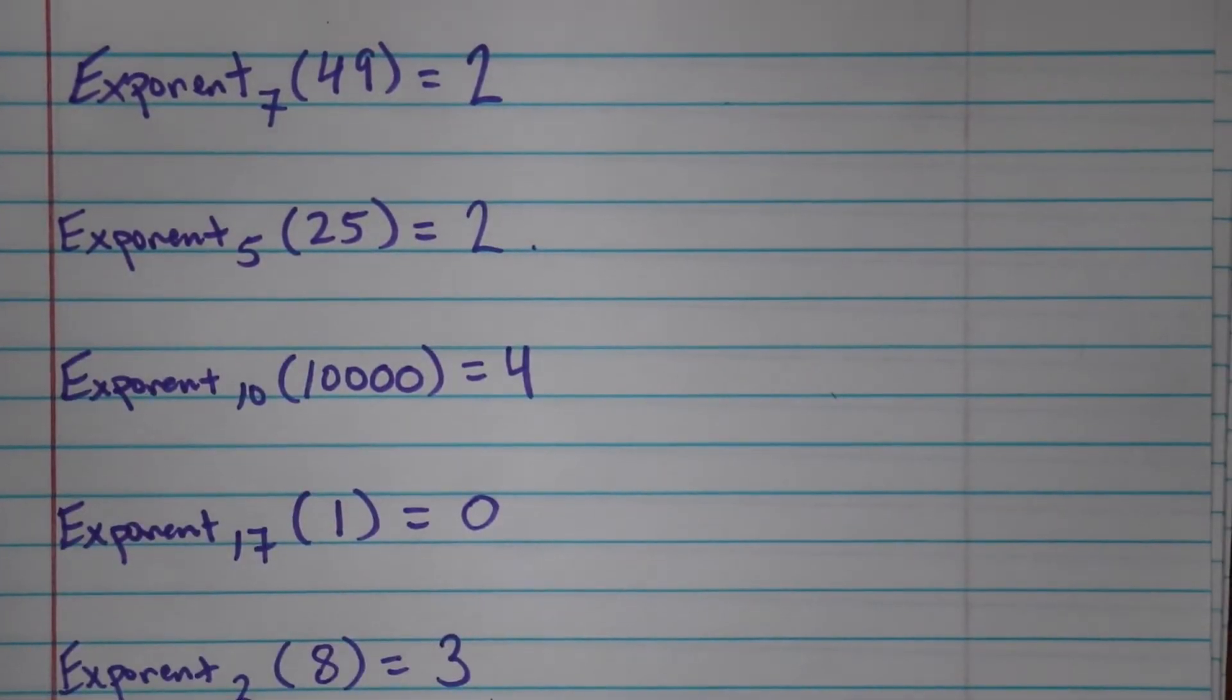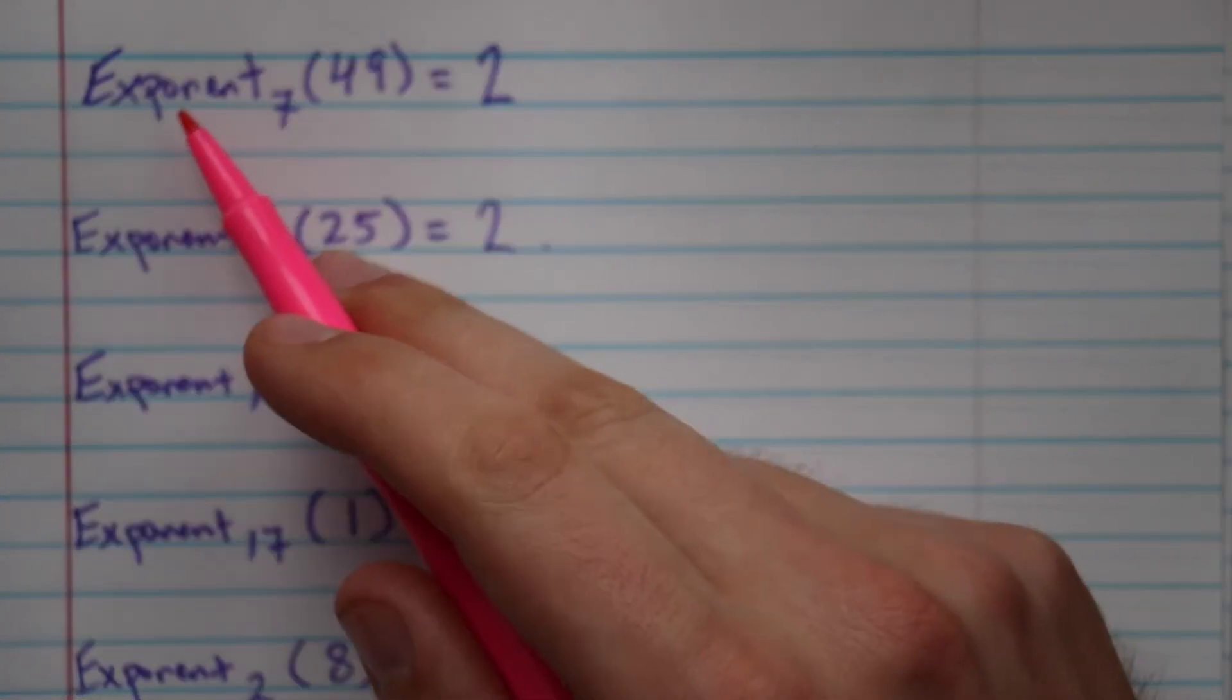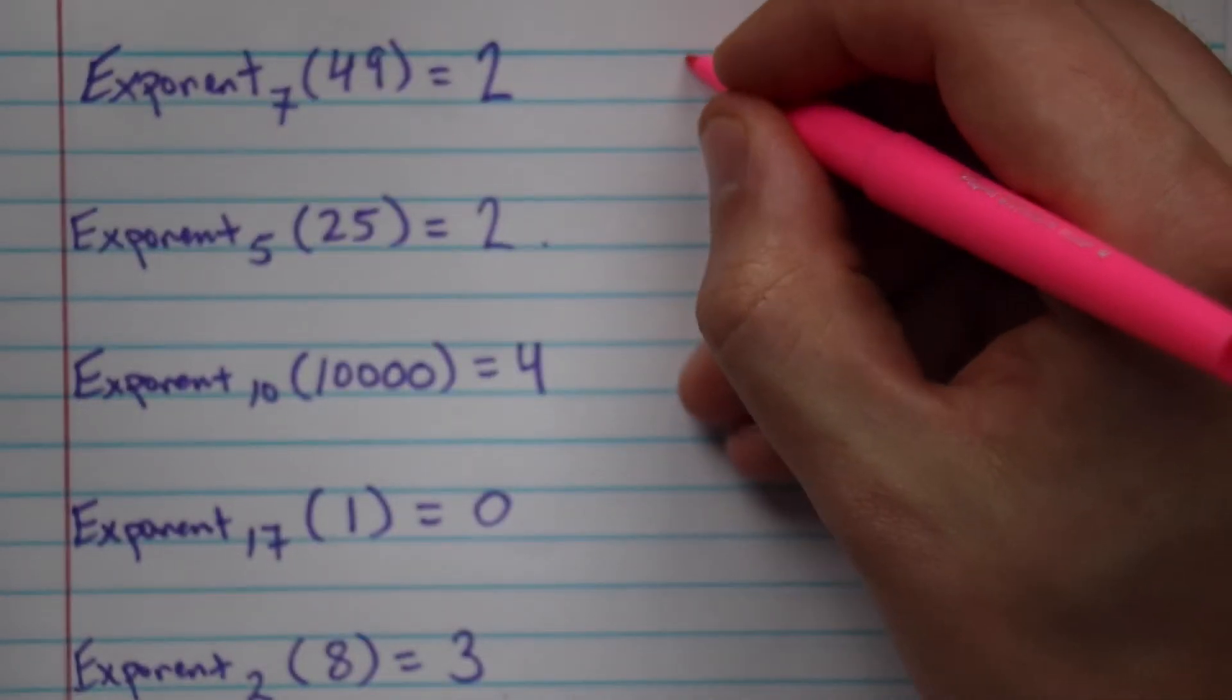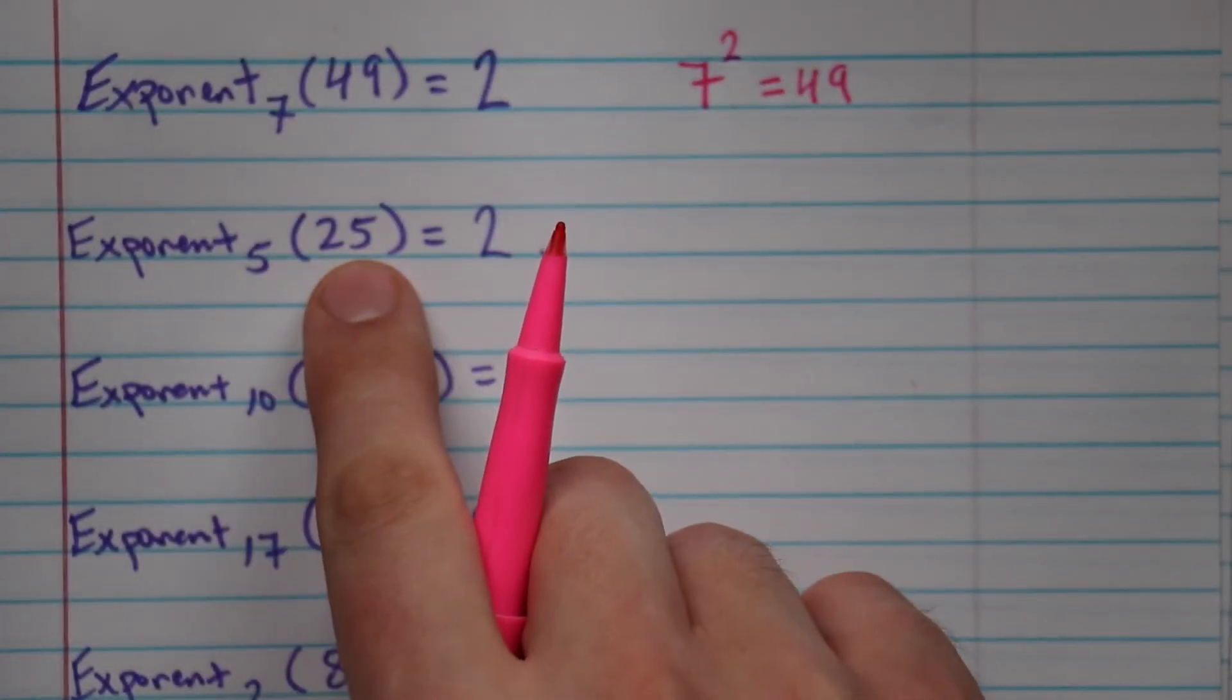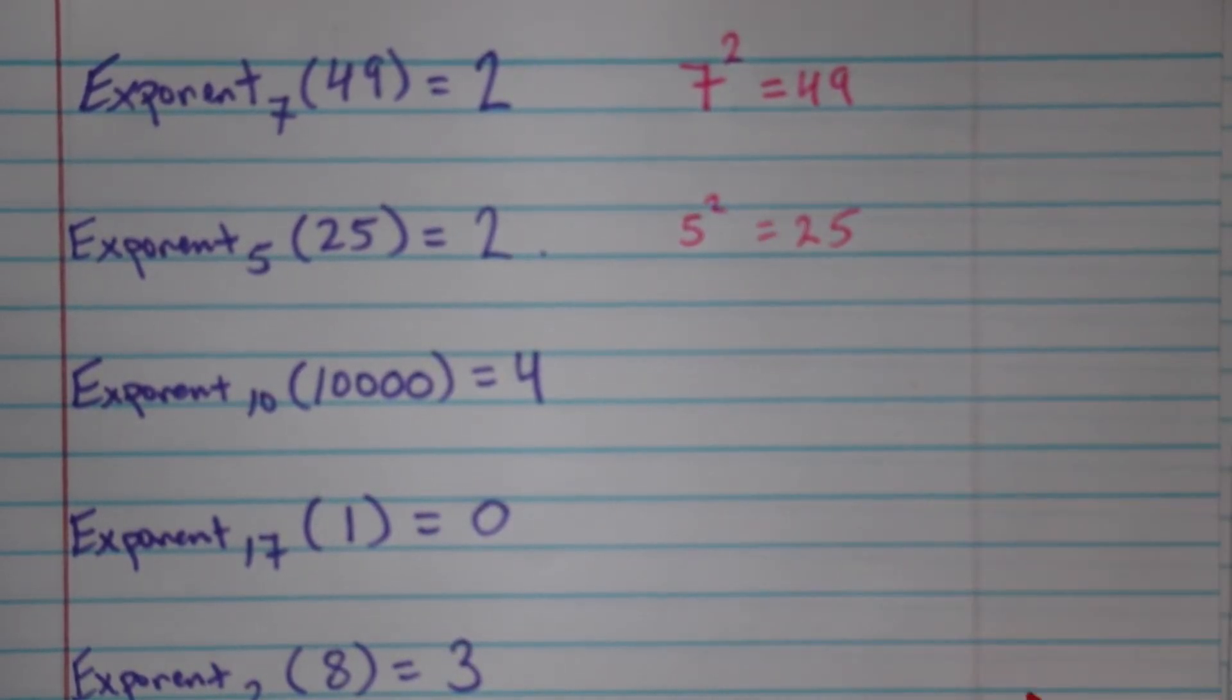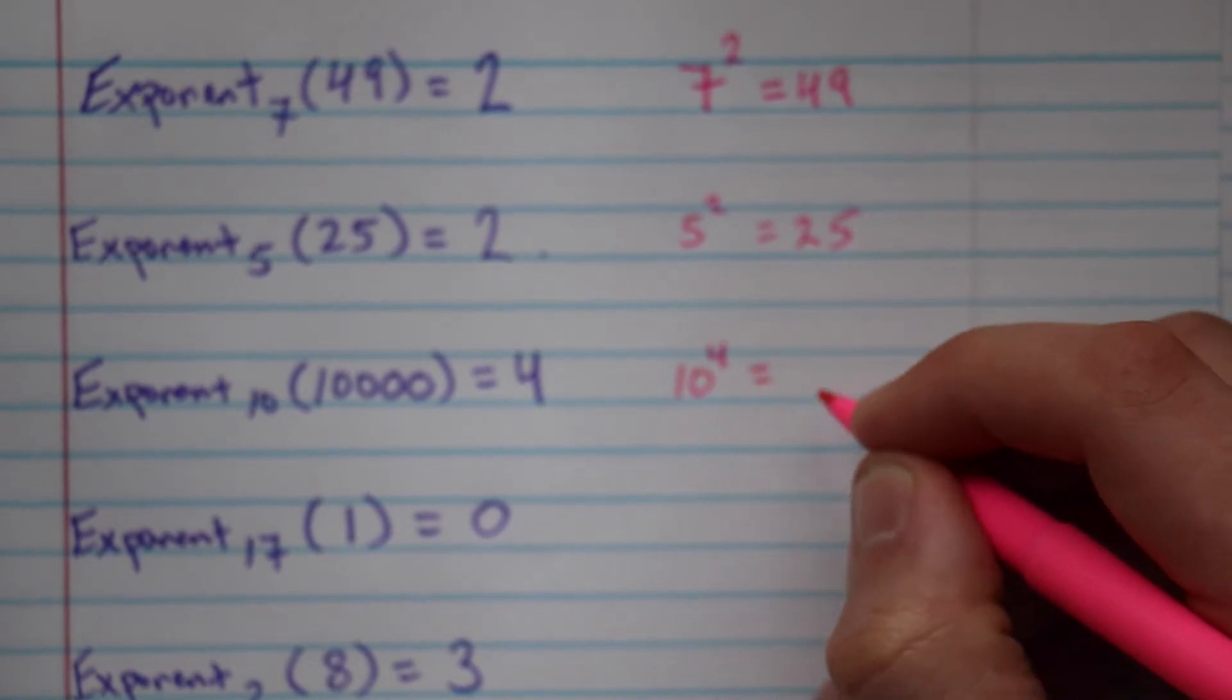Good! You probably noticed that name exponent is there for a reason. Exponent base 7 of 49 equals 2 because 7 to the second equals 49. And exponent base 5 of 25 is 2 because 5 squared equals 25.